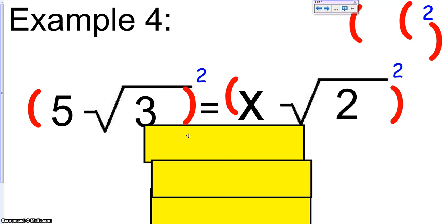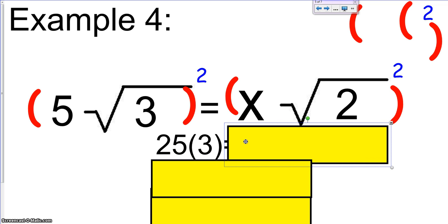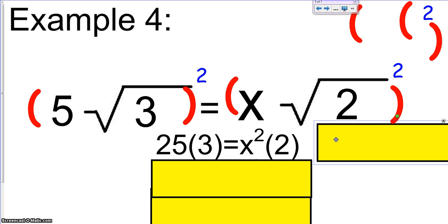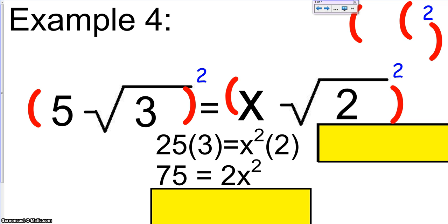When I look at this side, 5 squared is 25, and then square root of 3 squared is going to be just 3. So on this side, I have 25 times 3. On this side, I'm going to have x squared times 2. You could also write that as 2x squared, and I believe that's what I did here when I simplified. 25 times 3 is 75.